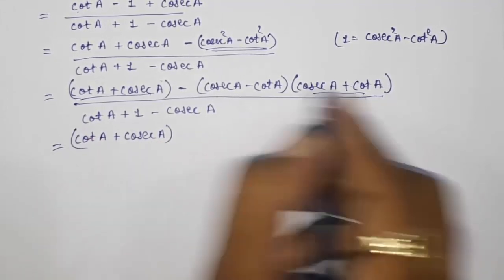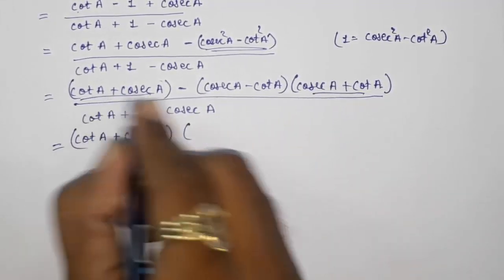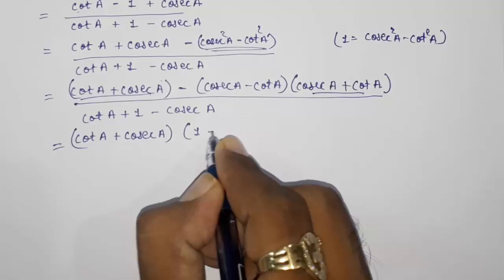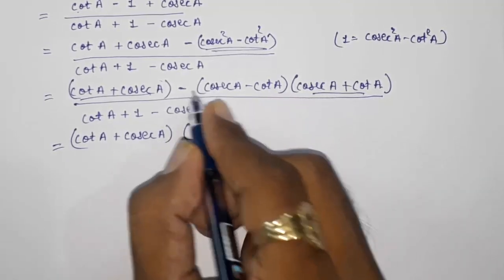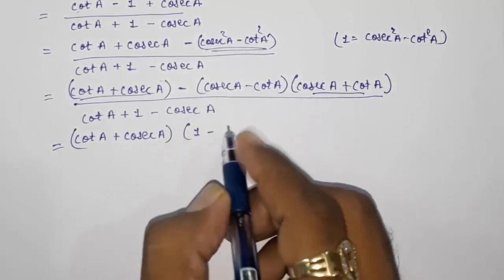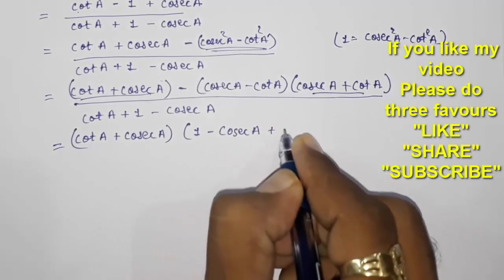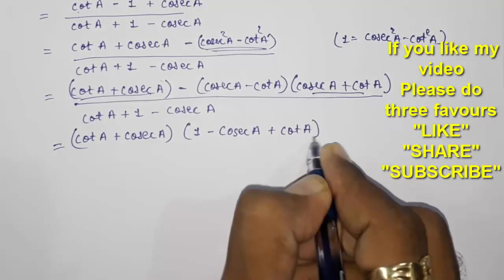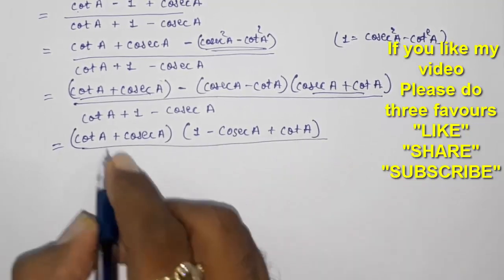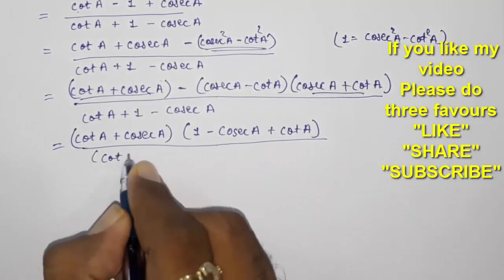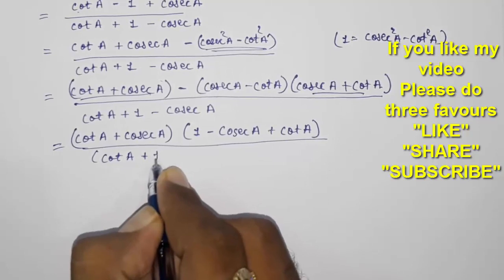That is common from these two. Now here nothing is remaining, so 1 minus, these two are remaining. If I am opening the bracket, sign is going to change: minus cosec A plus cot A in the denominator, and in the denominator that will remain the same: cot A plus 1 minus cosec A.